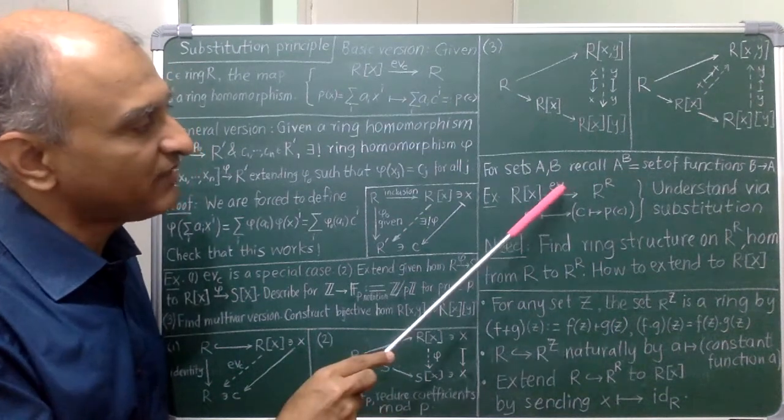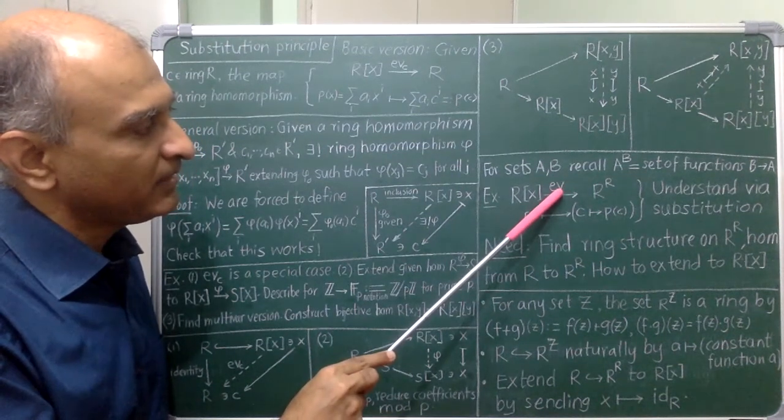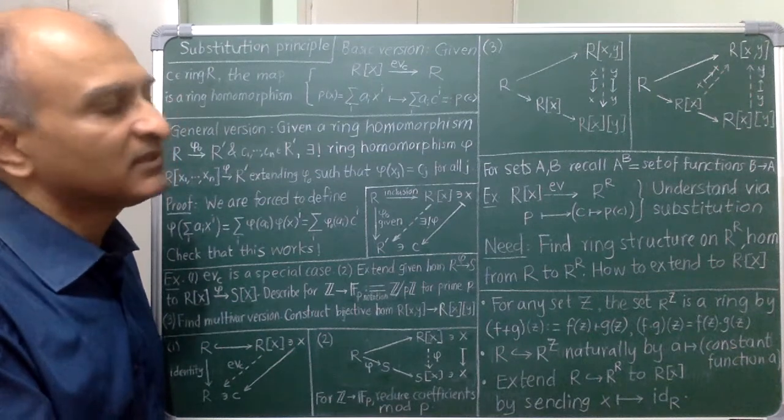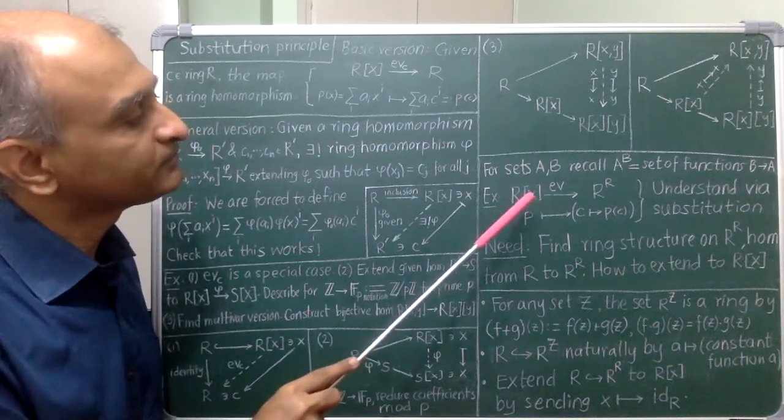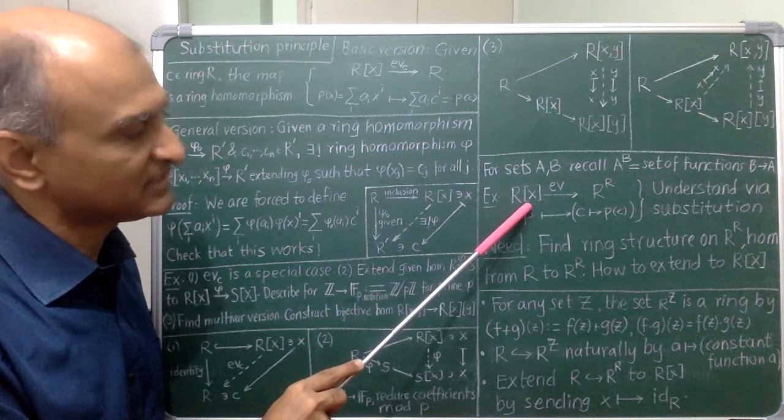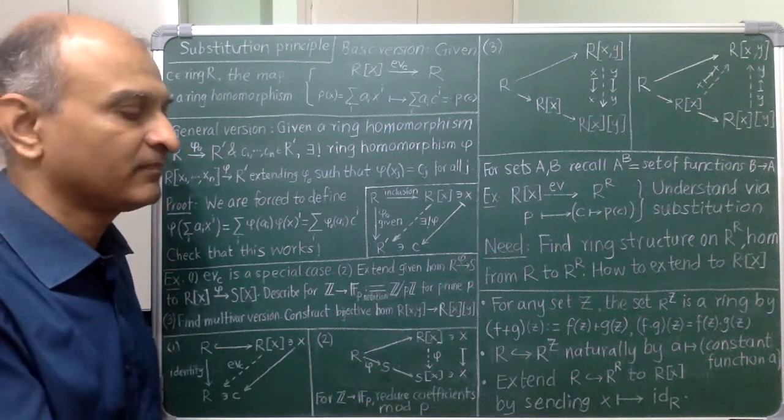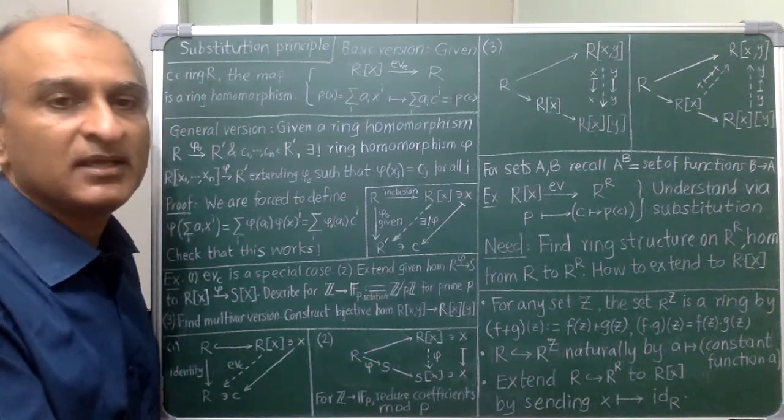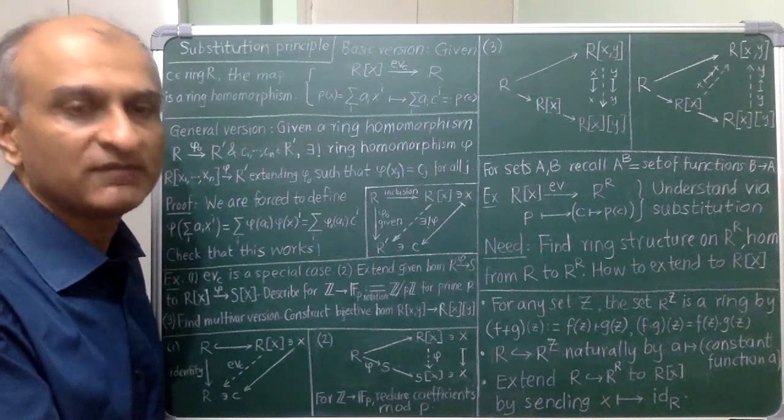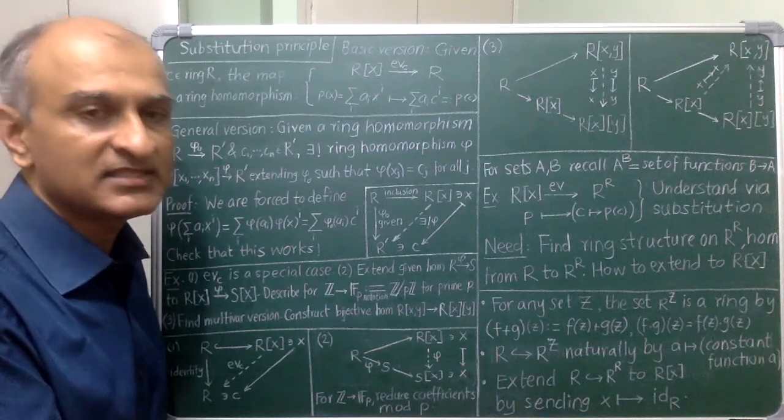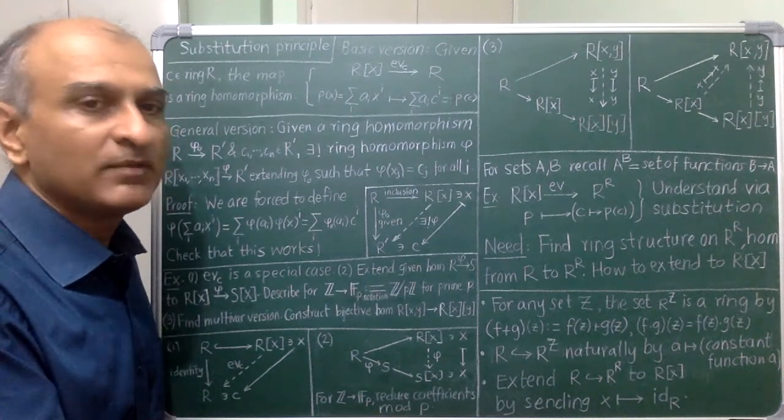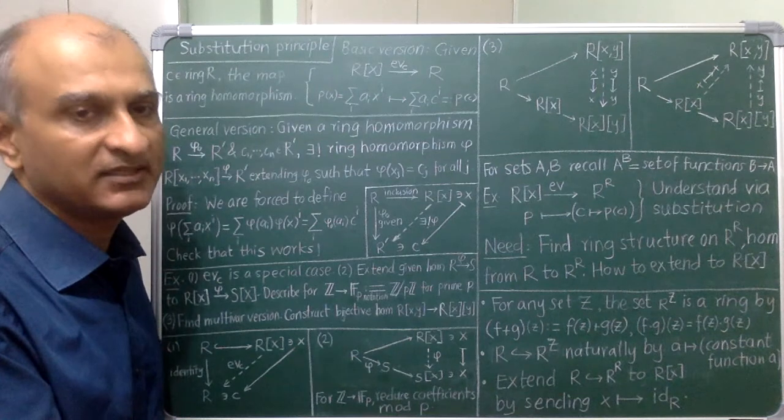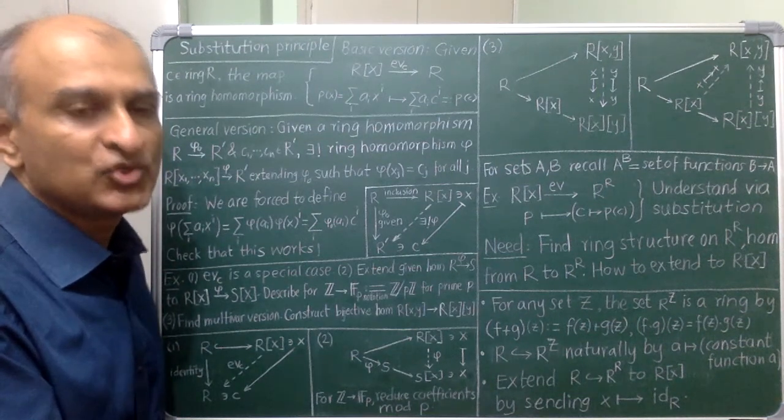The image of this evaluation homomorphism is called the set of polynomial functions as opposed to polynomials as symbols on the left hand side. The question is in school why did you not bother with any of this? And the answer is that for real polynomials, any polynomial can be uniquely recovered from the function that it defines.